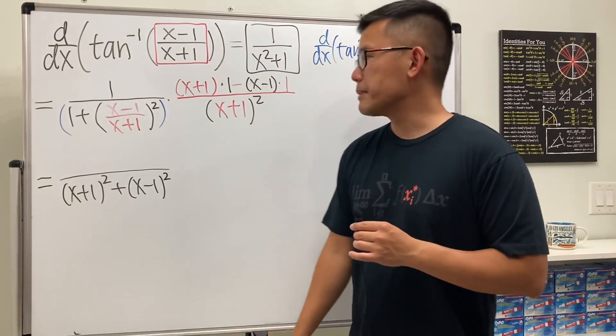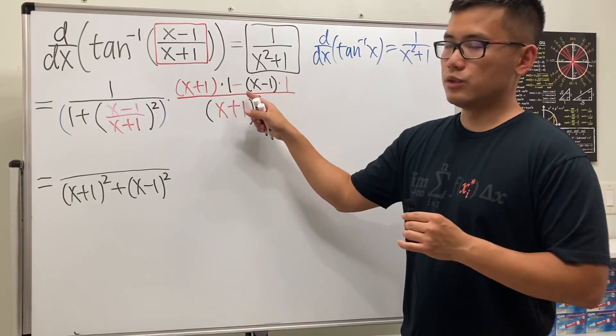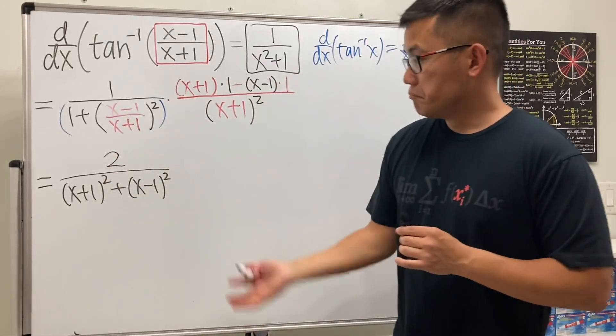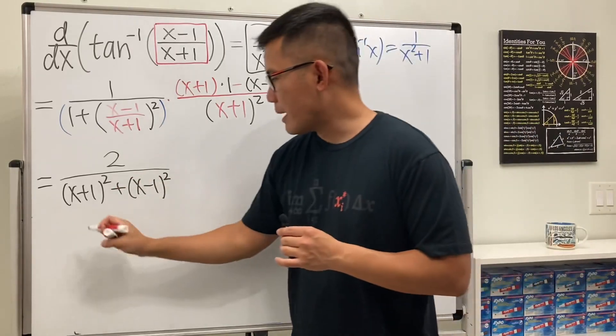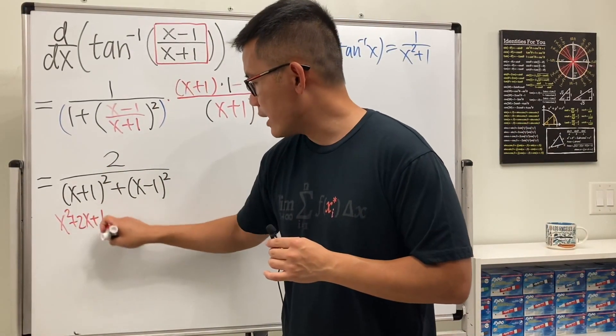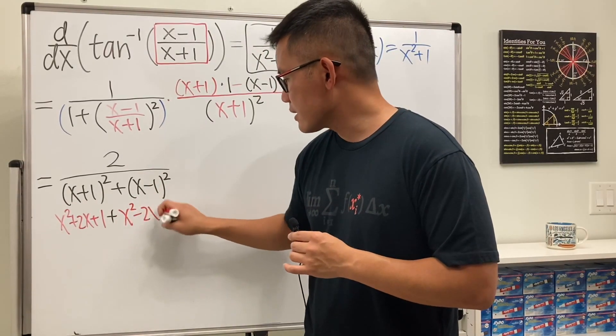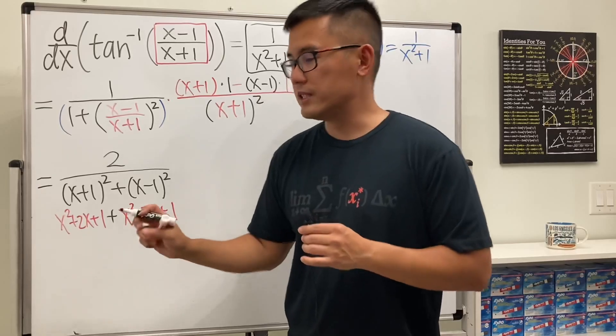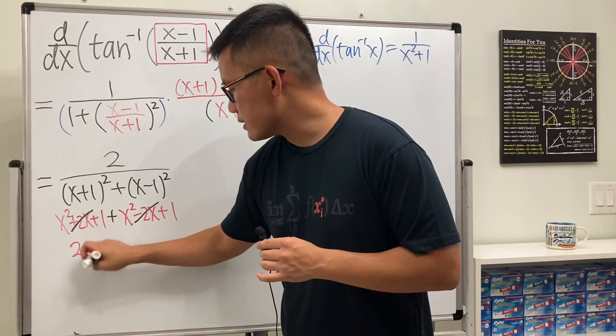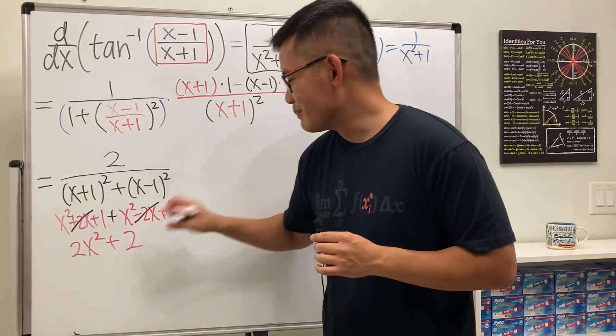And then for the top, let's see, this is just x plus 1, minus x, so x minus x is 0, and then 1 minus negative 1, so it's 2. And now let's just take care of the bottom. Let's open this, we get x squared, plus 2x, plus 1, and then plus, open that, we get x squared, minus 2x, and then plus 1. And then we'll see, the 2x minus 2x cancel, and then x squared plus x squared, that's 2x squared, and then 1 plus 1 is 3, just kidding, plus 2.